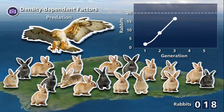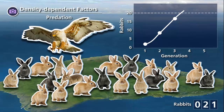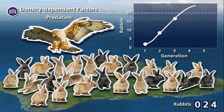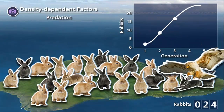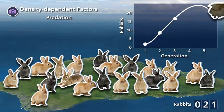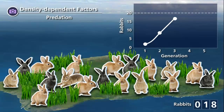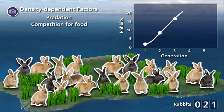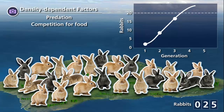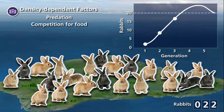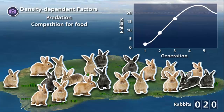Density-dependent factors include predation. When the size of the rabbit population increases, there is more prey available for predators to find, and therefore they kill relatively more rabbits, reducing the rabbit population. Competition for food is also a density-dependent factor that limits population growth to the carrying capacity. As the rabbit population increases, there is less foliage available for all individuals. As a result, the mothers aren't as well fed, and they produce smaller litters, and more rabbits starve to death. This decreases population size by reducing the birth rate and increasing the number of deaths.